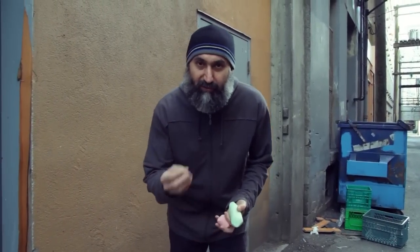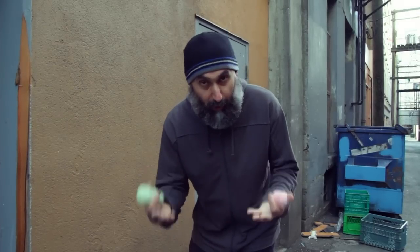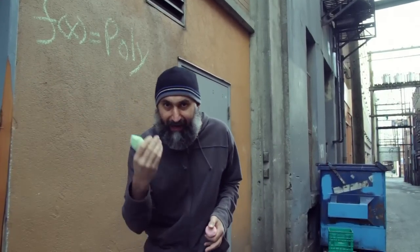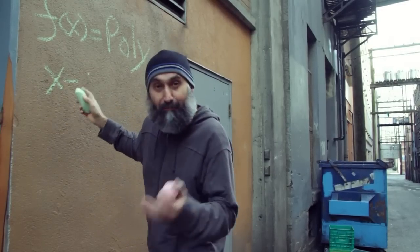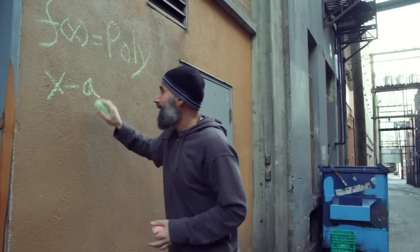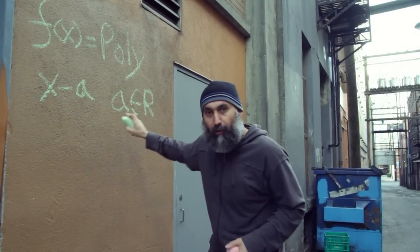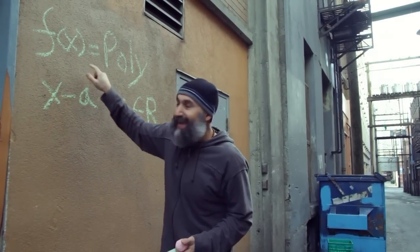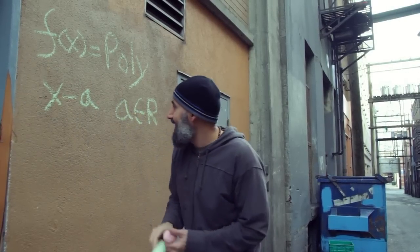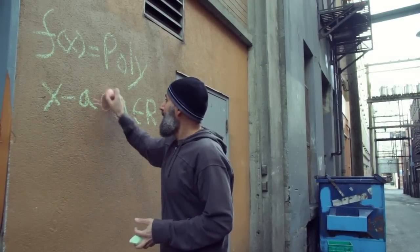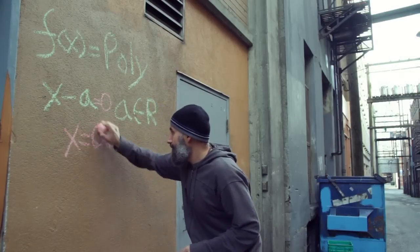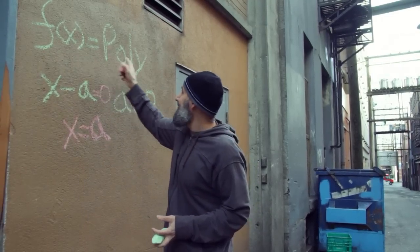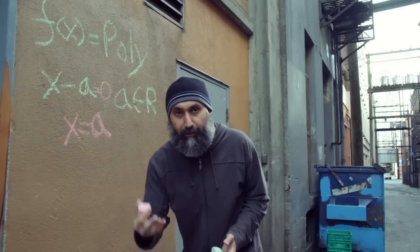So what does the remainder theorem tell us? The remainder theorem states the following: if you have a function F of X which is a polynomial function, and you take F of X and divide X minus A into it — where A is an element of the real number set — if you take a polynomial function and divide X minus A into your polynomial function, the remainder theorem states that if you set X minus A equal to zero and solve for X, you get X is equal to A. Then if you take your A and substitute it in for all the X's in your polynomial function, your remainder is F of A.